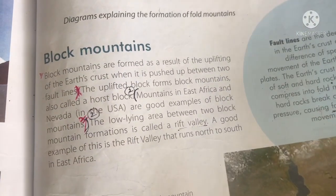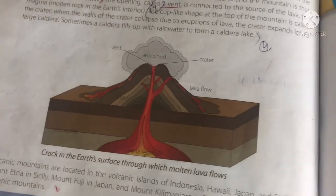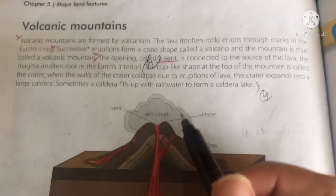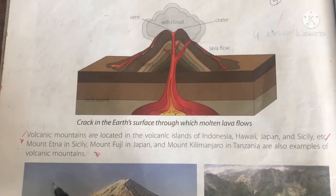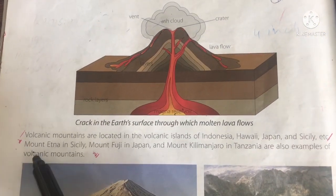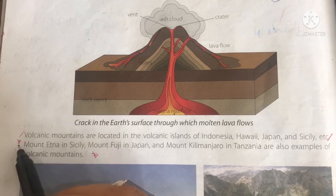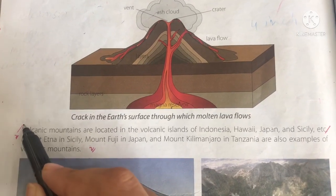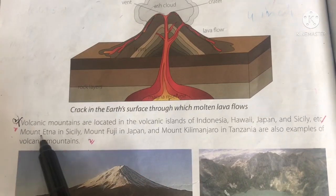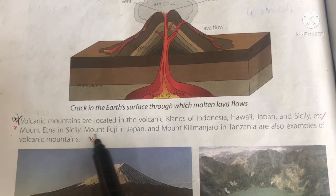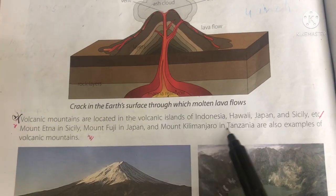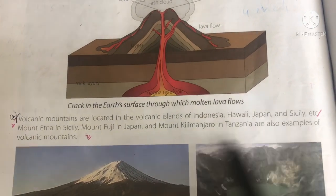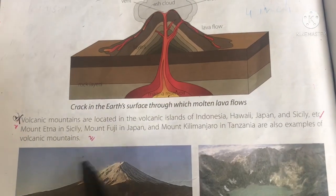Now come towards the third type — volcanic mountains. The examples are Mount Etna in Sicily, Mount Fuji in Japan, and Mount Kilimanjaro in Tanzania.